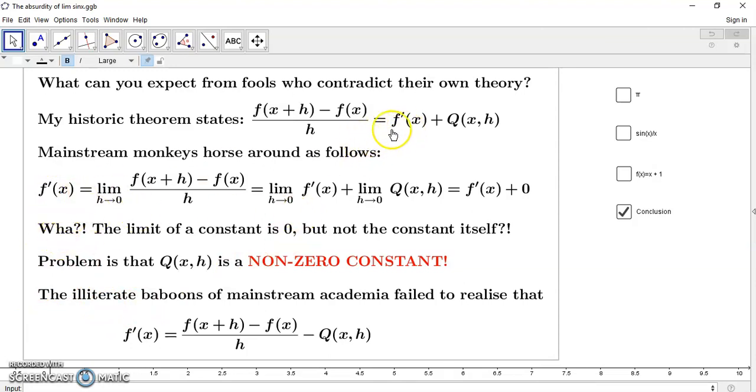So again, we notice that the limit of a constant is the constant itself. Let's conclude. So what can you expect from fools who contradict their own theory? My historic theorem, geometric theorem of January 2020, states that the slope of the non-parallel secant line is equal to the slope of the derivative plus the difference.